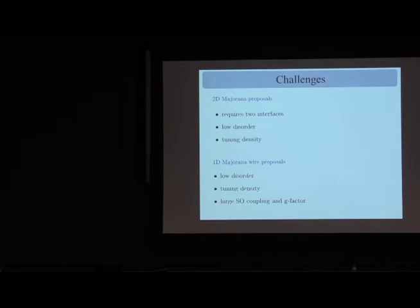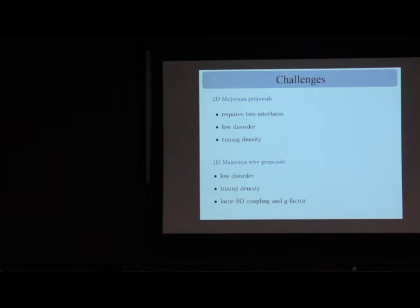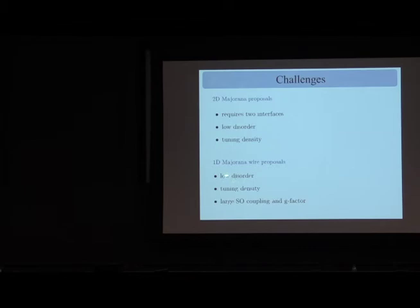Let me conclude this section by outlining the challenges. The 2D Majorana proposal based on semiconductor–superconductor heterostructures requires two interfaces, and making clean interfaces is really hard. Low disorder is essential — interfaces must be smooth. One must also tune the density to the right parameter regime. The 1D proposal is less restrictive: one needs low disorder, correct density tuning, and a material with large spin-orbit coupling and large g-factor. Orbital effects from the in-plane magnetic field can be minimized by making the superconductor thin (e.g., ~50 nm).